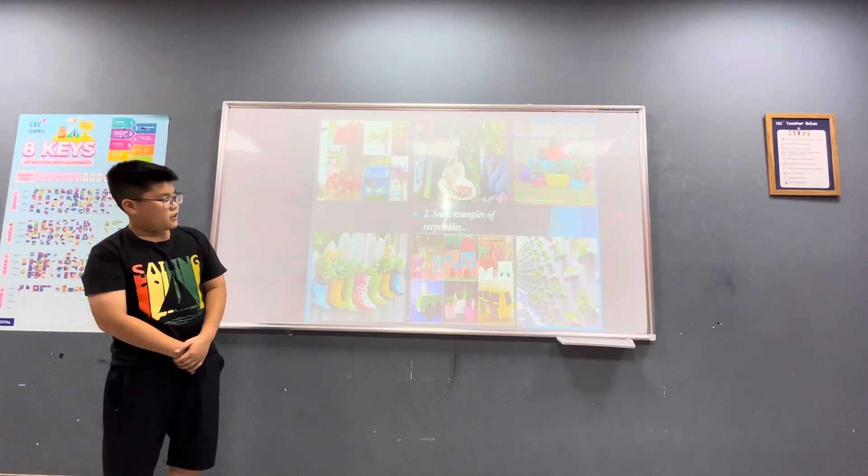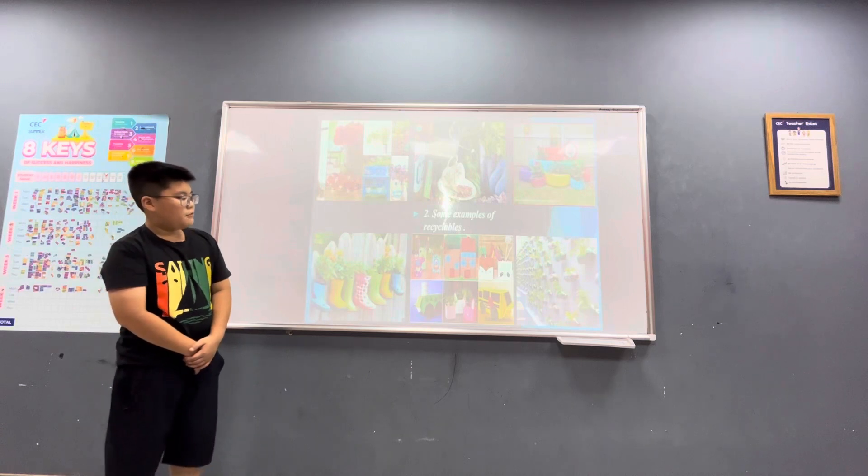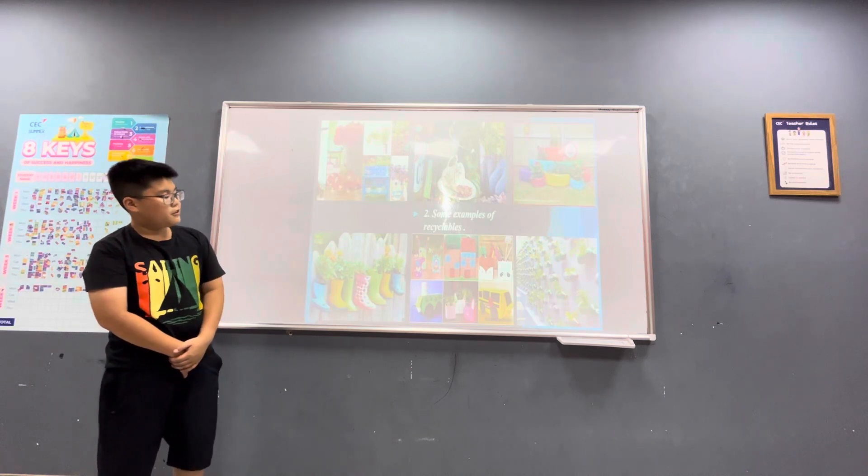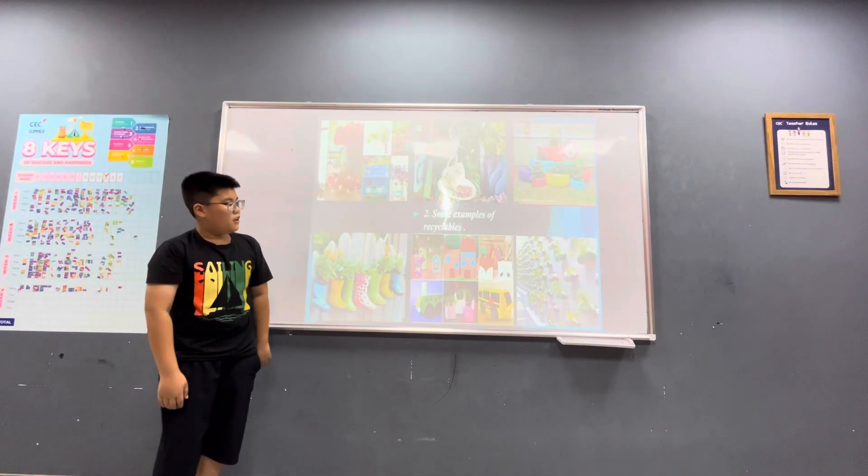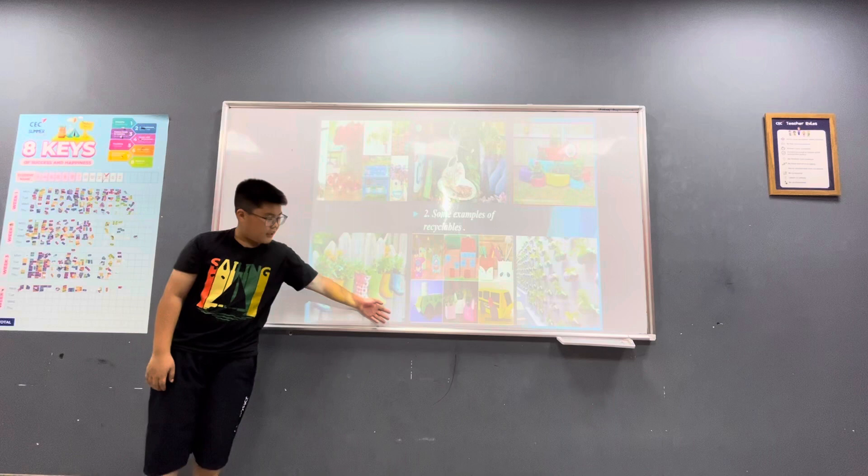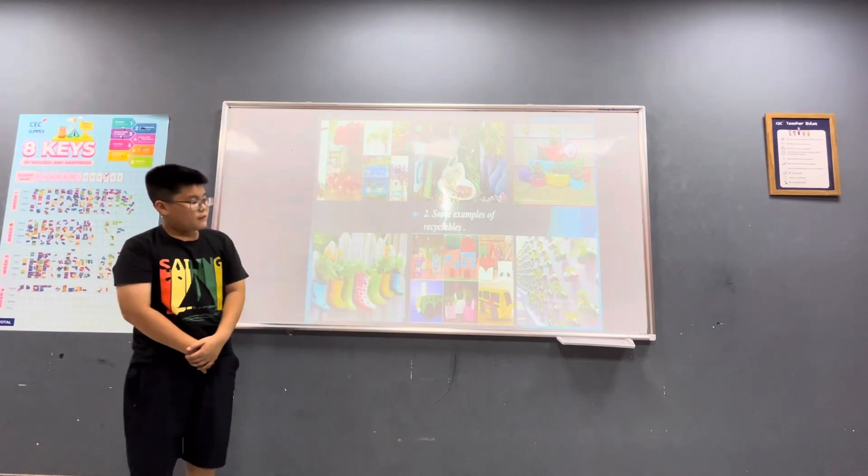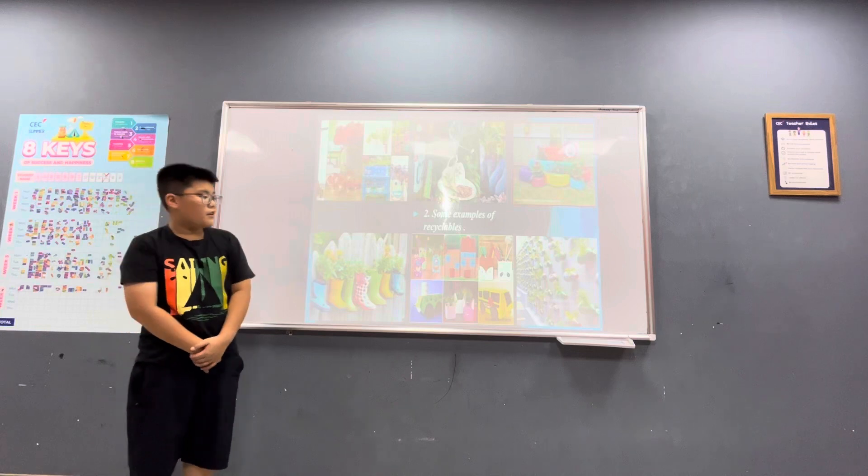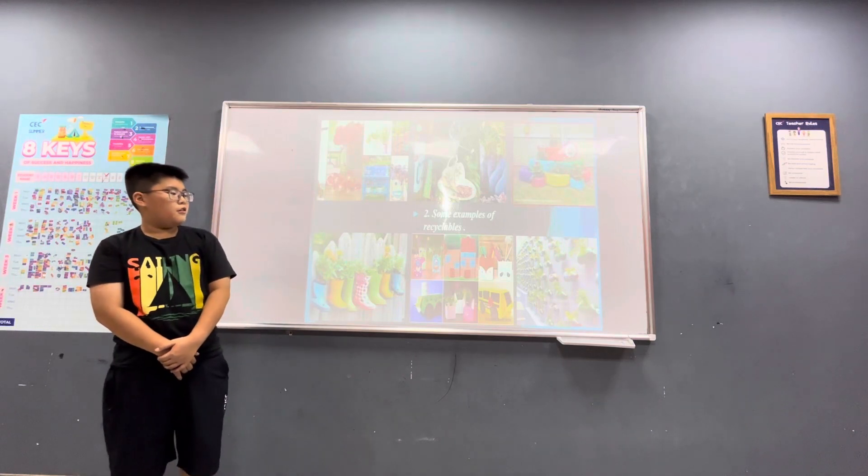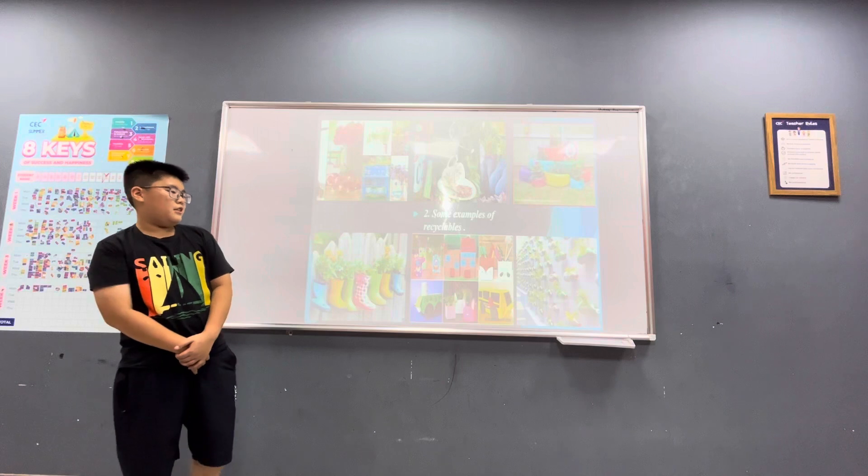Next picture, we use some cardboard boxes to make some cute models. For example, you can see a piece of a house, a train and a bus. And the last picture is so popular in Vietnam. We use some plastic bottles to plant vegetables in it.